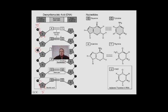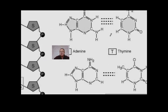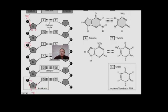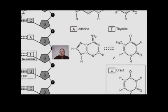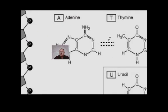When the bases pair up like that, it's called complementary base pairing. Looking at guanine and cytosine: there are three hydrogen bonds that hold them together, each dashed line representing one hydrogen bond. For adenine and thymine, there are two hydrogen bonds holding them together. This is referred to as complementary base pairing.